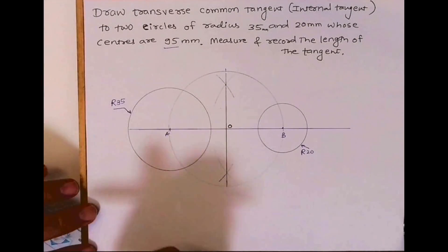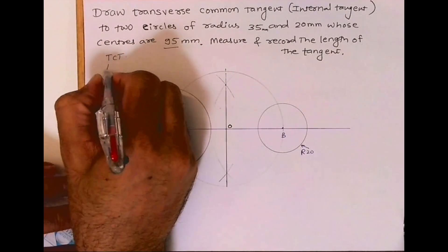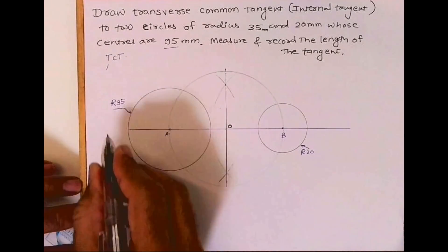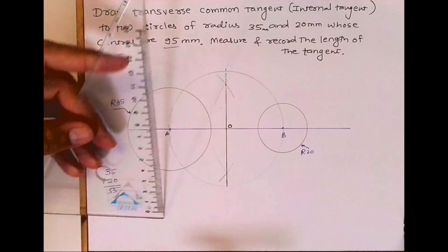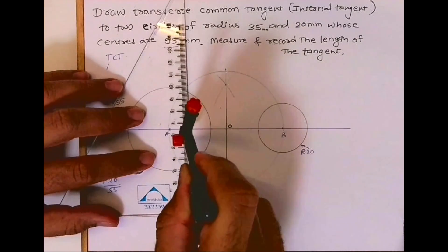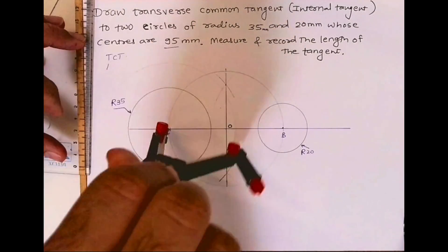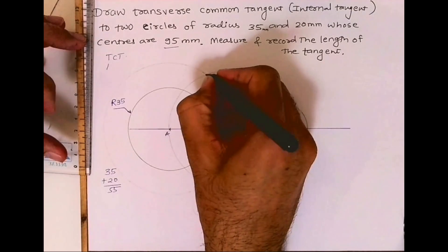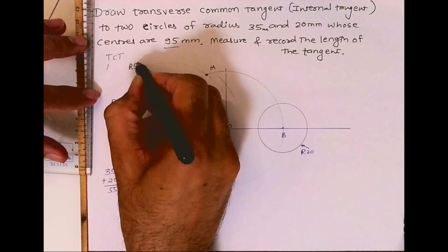After that, TCT - transverse common tangent. I will calculate TS total: 35 plus 20, so that is 55. I will draw a radius 55. This is radius 55.